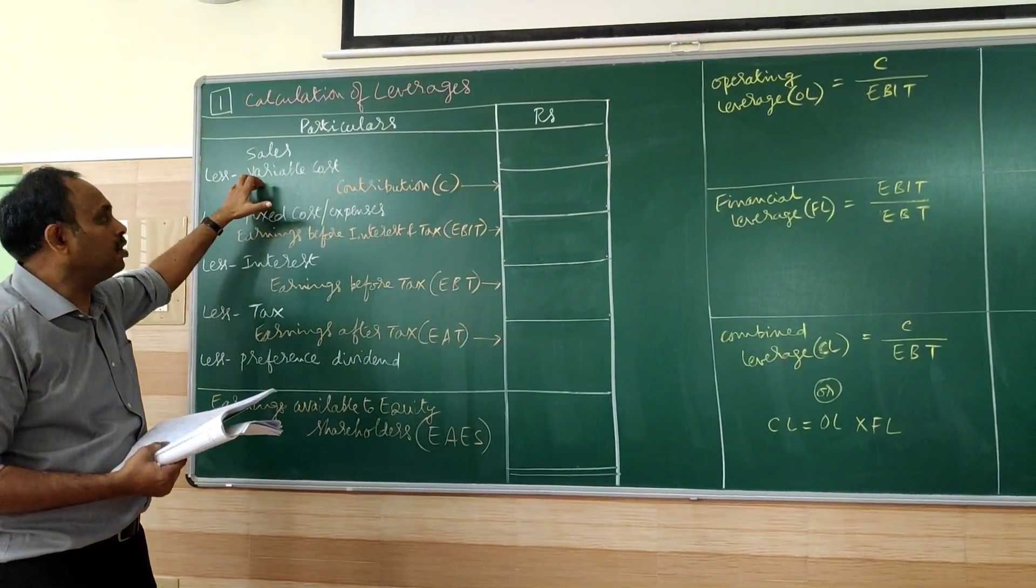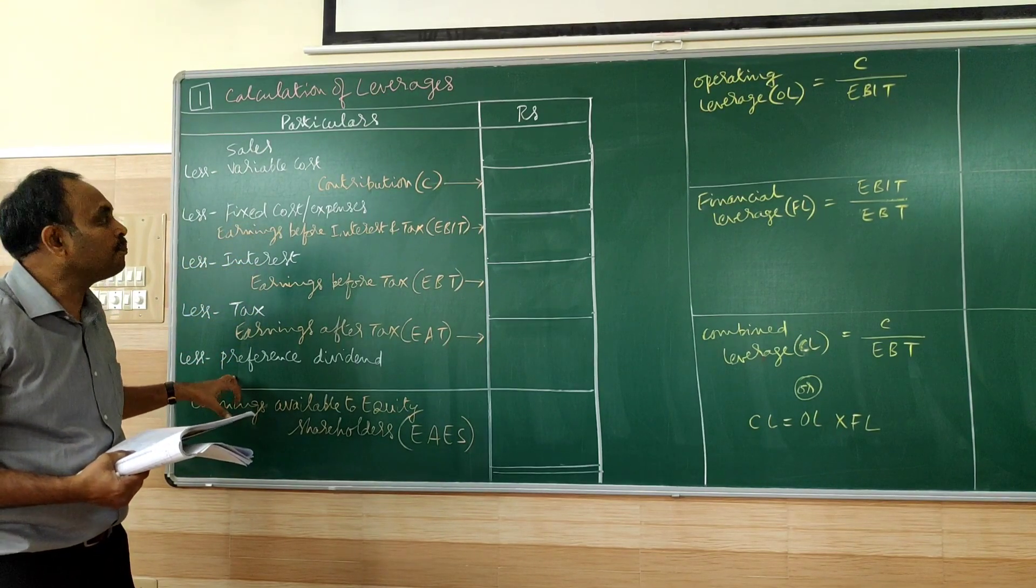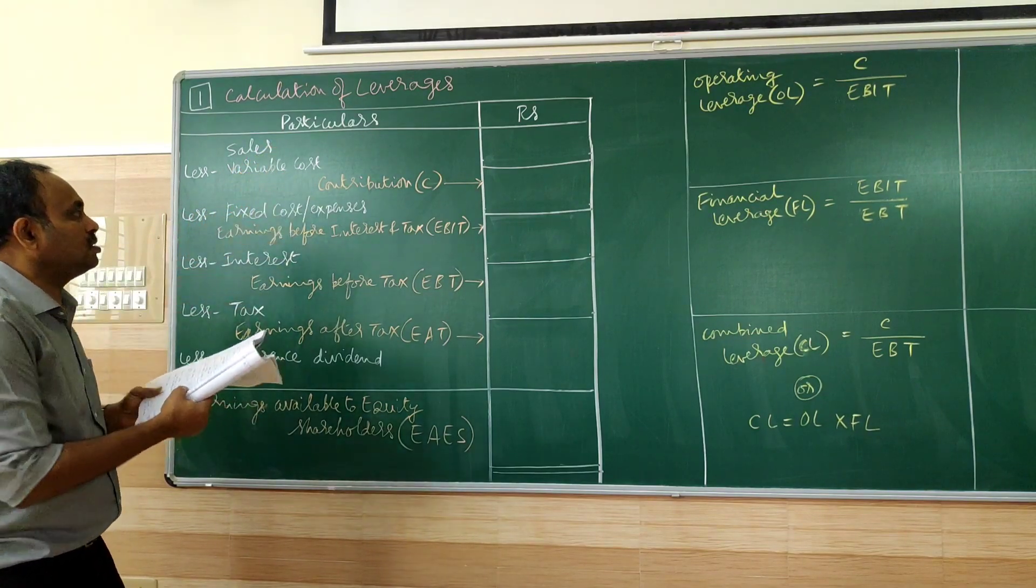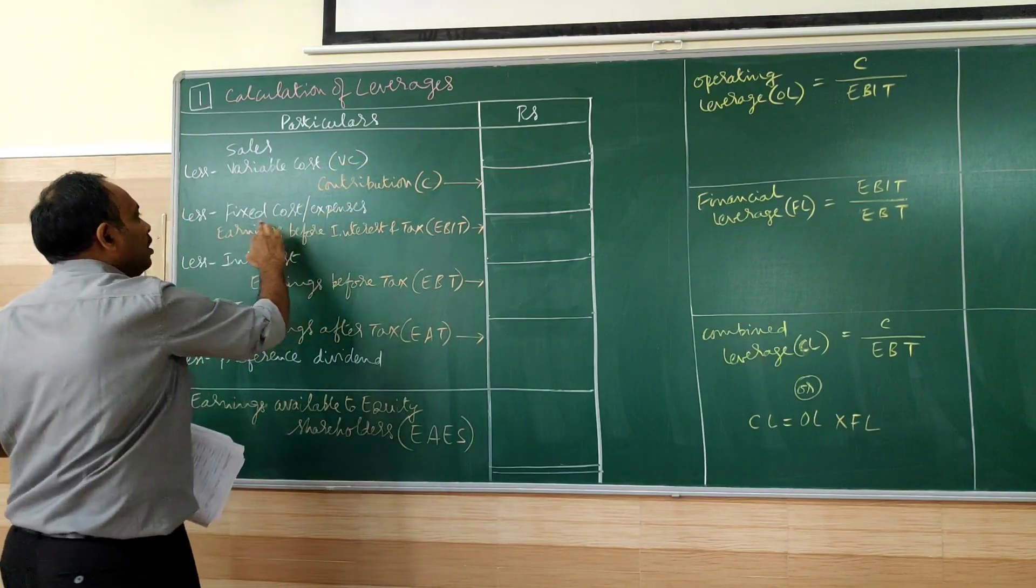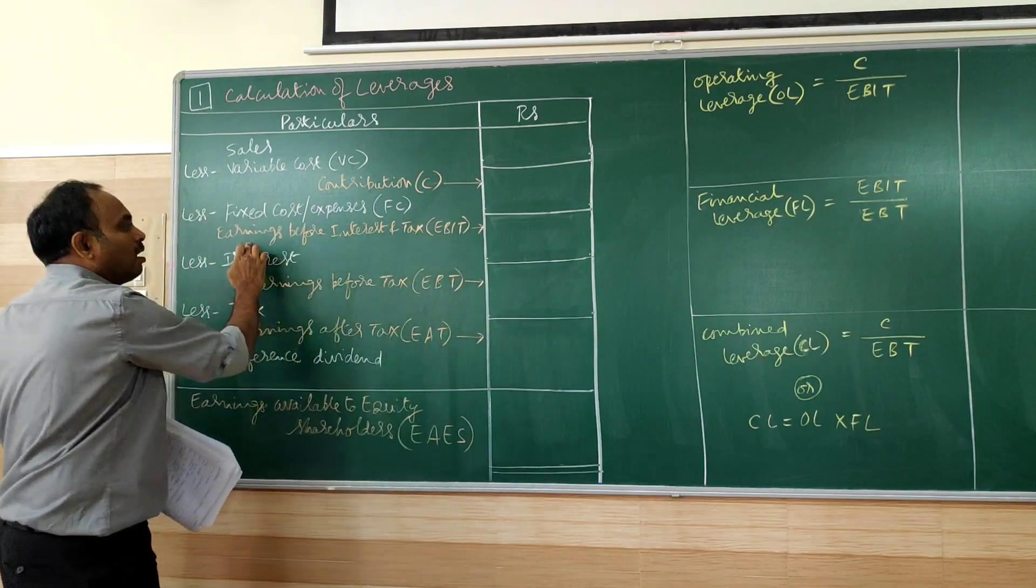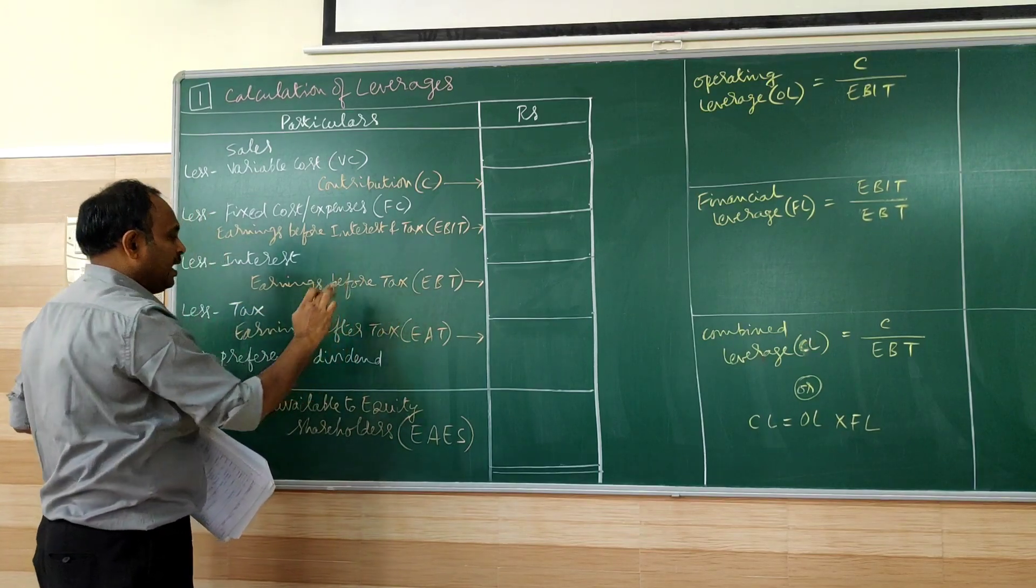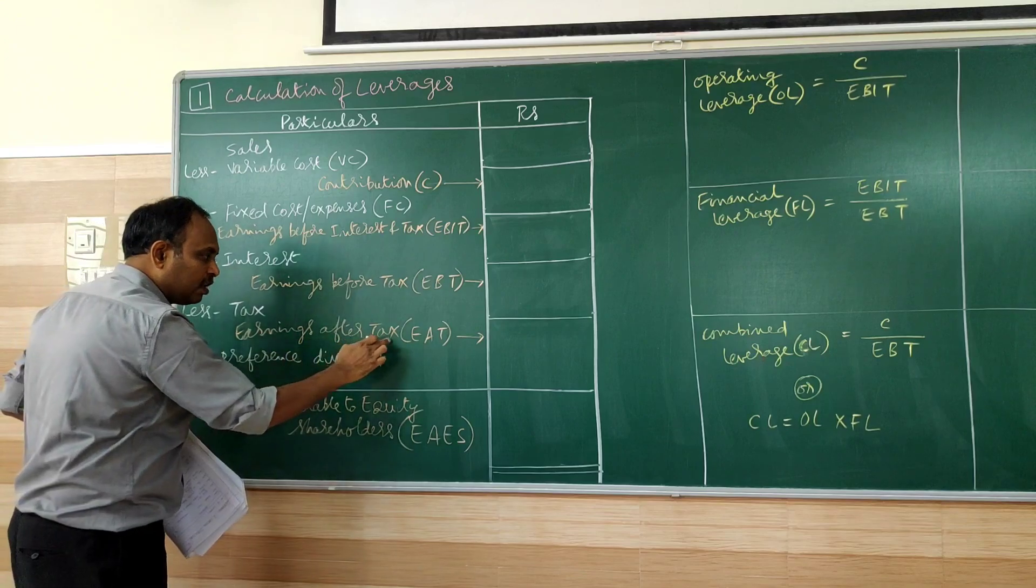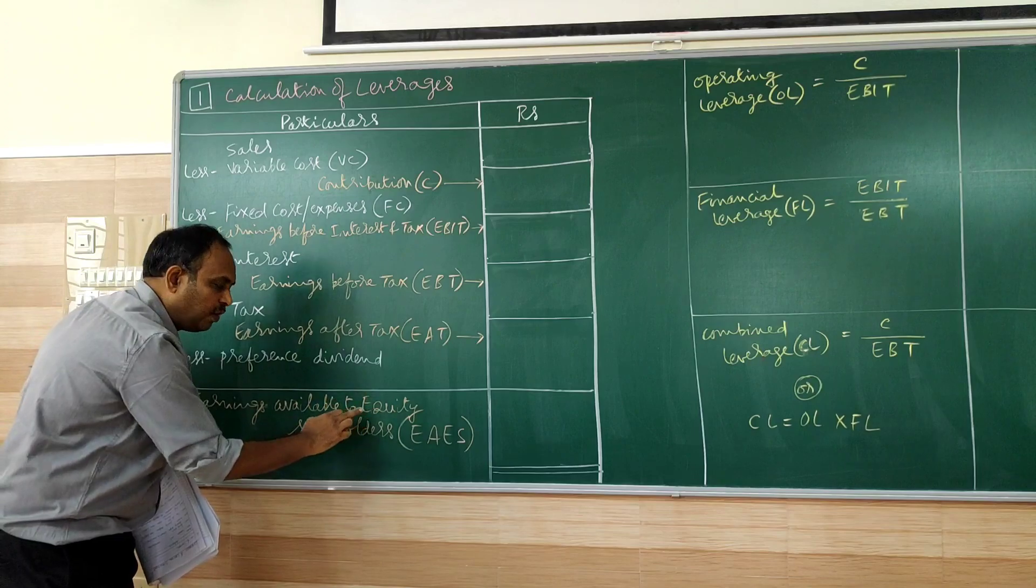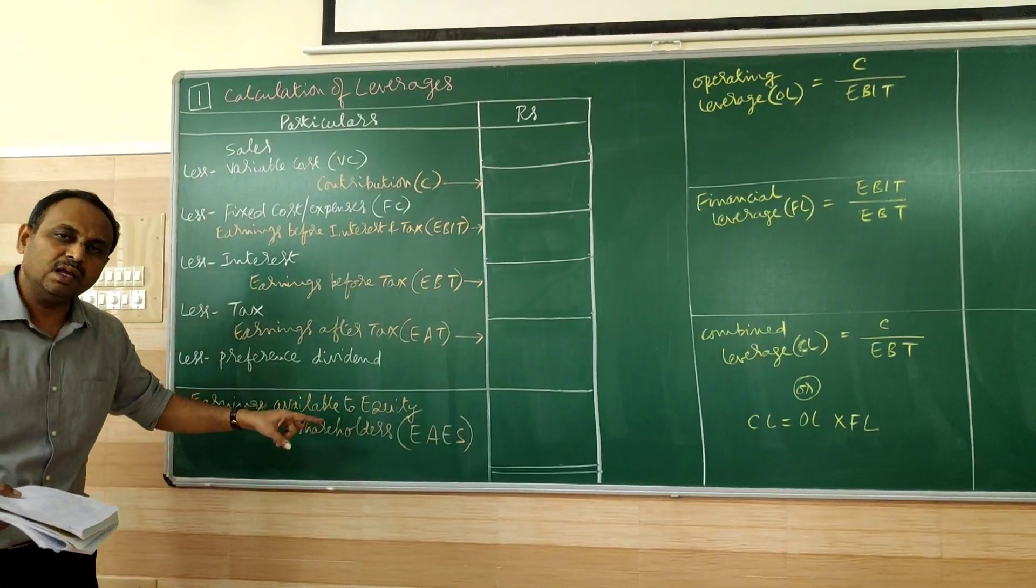Sales, less variable cost, less fixed expenses, less interest, less tax, less preference dividend. Sales minus variable cost is contribution. Less fixed cost is EBIT, earning before interest and tax. Less interest will be earnings before tax. Less tax will be earnings after tax. Less preference dividend will be earnings available to equity shareholders.